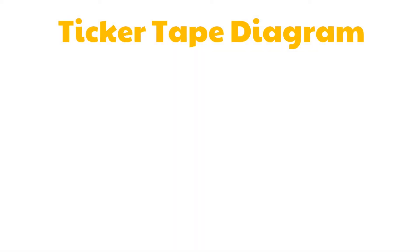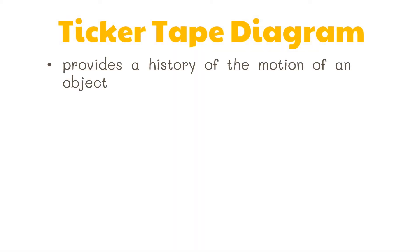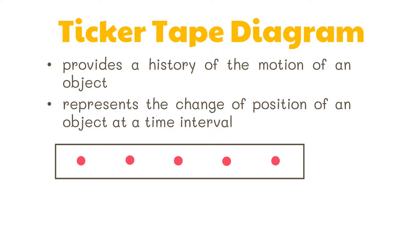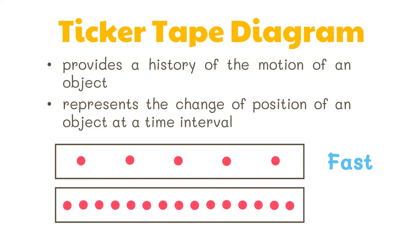The trace of the dots on the tape provides a history of the motion of an object, producing what is called a ticker tape diagram, or simply known as a tape chart. The distance between the dots in a tape chart represents the change of position of an object at a time interval. A large distance between the dots means the object was moving fast during a time interval. On the contrary, a small distance between the dots indicates that the object moves slowly during the time interval.